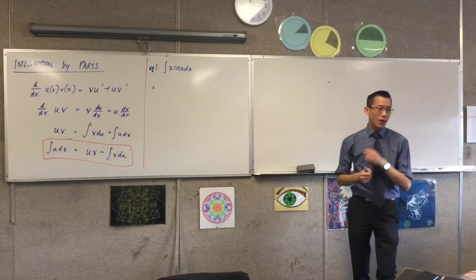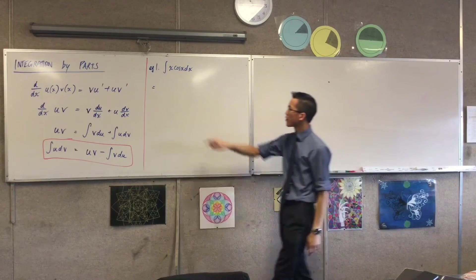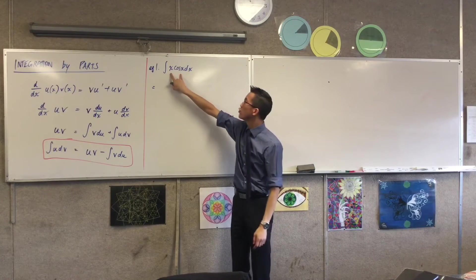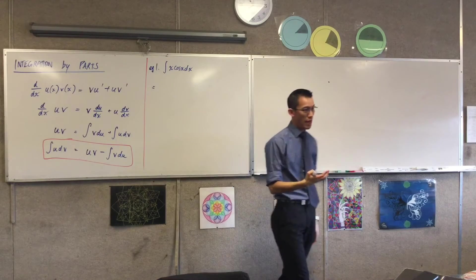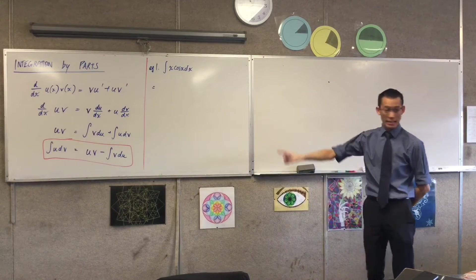How are we going to do this? I am going to choose out of these two, I'm going to choose one of them to be u and I'm going to choose the other one to be dv/dx.